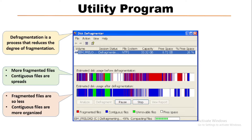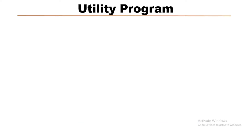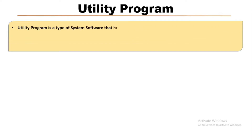After this process, data will be organized in the hard drive and the computer will run faster. This is one of the important utility programs. Utility programs are a type of system software that helps to manage, maintain, and control the computer system.